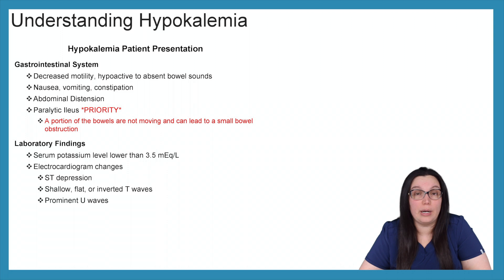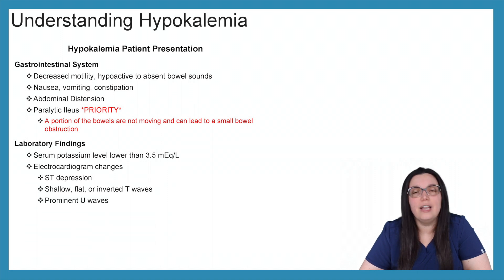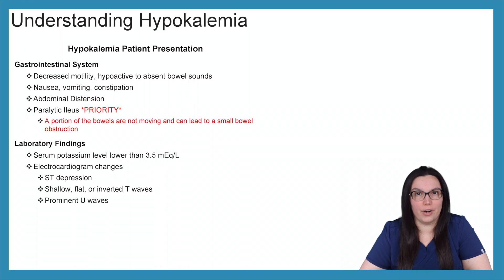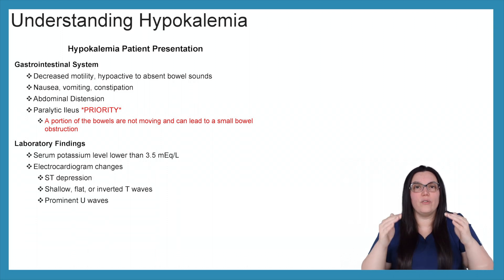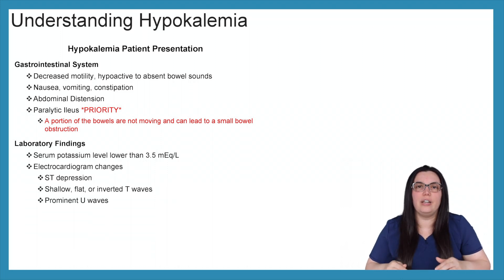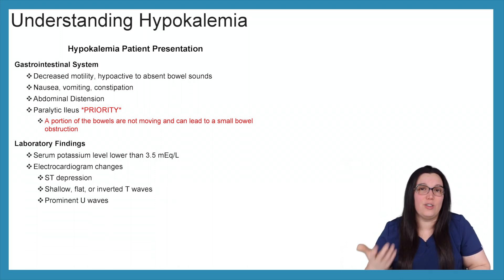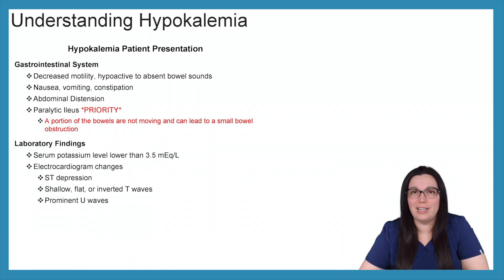Paralytic ileus is extremely important to know — it's a priority and will likely appear on your NCLEX. It is a portion of the bowel that is not moving, which can lead to a small bowel obstruction. When a patient has hypokalemia, remember that everything is going to be low and slow, and paralytic ileus can occur. Lab findings: serum potassium will be less than 3.5 milliequivalents per liter, and ECG changes include ST depression, shallow, flat, or inverted T-waves, and prominent U-waves may be present depending on severity.